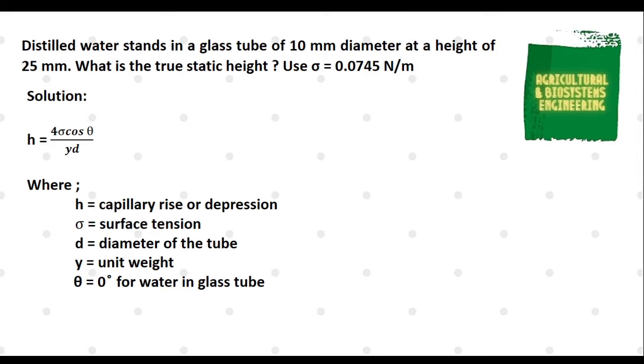We all have our values for our given so we only substitute it to the formula. We now have 4 multiplied to the surface tension of 0.0745 N/m, multiplied to cosine 0, all over the specific weight of water of 9810 N/m³ multiplied to the diameter of 10 mm. The unit of diameter is in millimeters so we have to convert that into meters using the conversion factor of 1 meter equals 1000 mm.